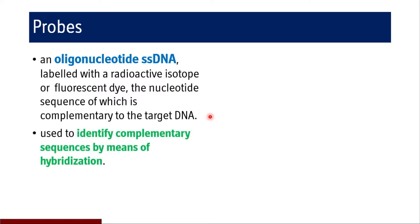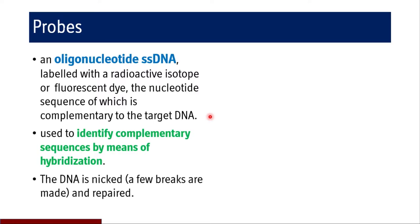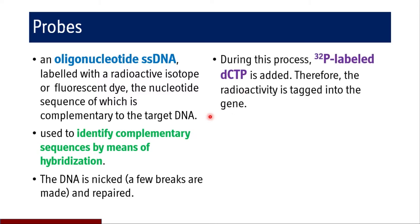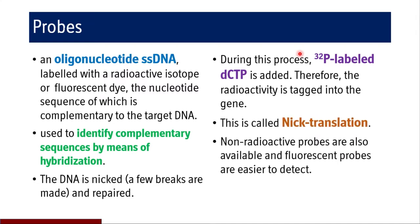The probe is used to identify complementary sequences by means of hybridization — the probe binding to complementary sequences in DNA, RNA, or protein. The DNA is nicked, a few breaks are made, and during repair, 32-phosphorus labeled deoxycytidine triphosphate is added, tagging radioactivity into the gene. After hybridization, radioactivity reveals the particular sequence — this is called nick translation. Non-radioactive probes are also available, and fluorescent probes are easier to detect by detecting the fluorescence.